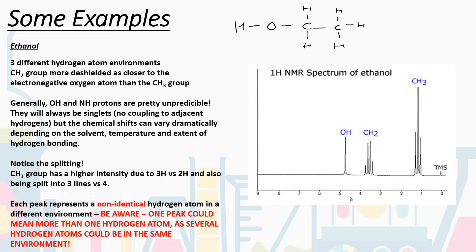Considering where each environment appears on the spectrum: the OH hydrogen is directly bound to an electronegative oxygen, so it's the most deshielded and will have the highest chemical shift — furthest to the left. The CH₂ group is closer to the oxygen than the CH₃ group, so the CH₂ hydrogens are bound to a carbon directly attached to the electronegative oxygen, making CH₂ more deshielded than CH₃.